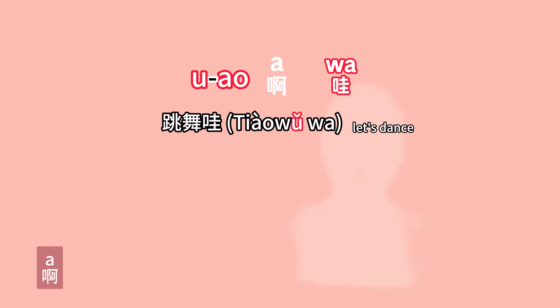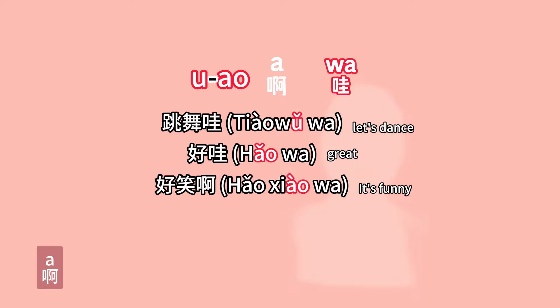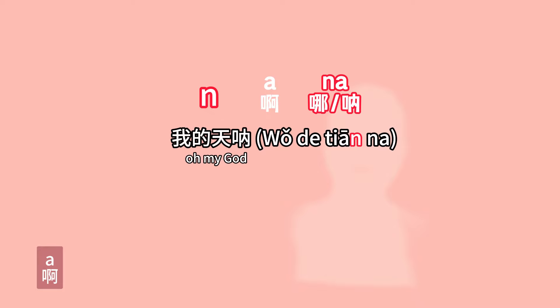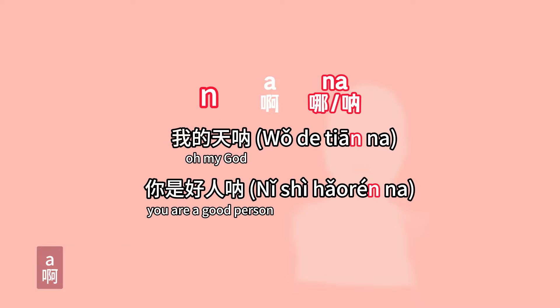If the preceding word ends with 呜 or 啊, 啊 is pronounced as 哇: 跳舞哇, 好哇, 好笑哇. If the preceding word ends with 呢, 啊 is pronounced as 哪: 我的天哪, 你是好人哪. Even though the pronunciation of 啊 changes, when writing it is still written as 啊.